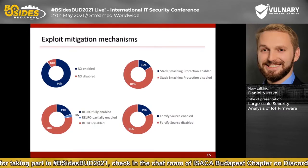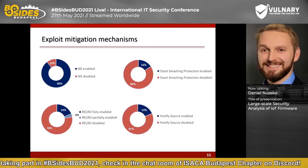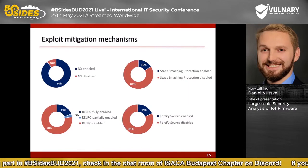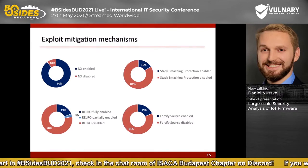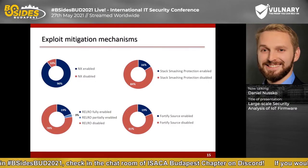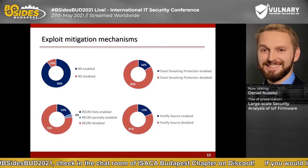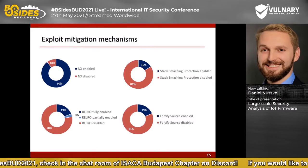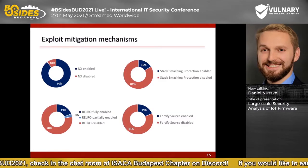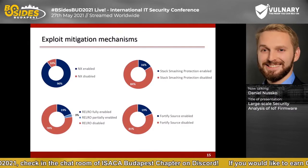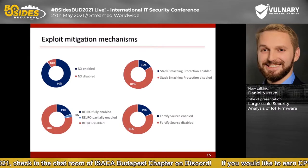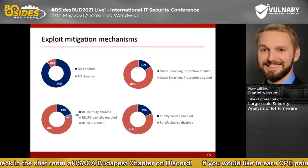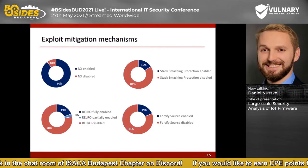Let's look at binary hardening statistics. All ELF executables and libraries are checked for the use of common exploit mitigations — compiler flags that make exploitation much more difficult. NX, the no-execution bit, is set by default when compiling with GCC, which explains why 90% of analyzed binaries make use of NX. However, all other protection mechanisms like stack canaries, RELRO, and Fortify Source must be explicitly enabled during compilation, which is likely why they are not present in most executable files.